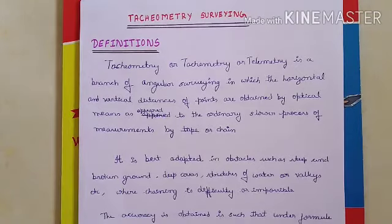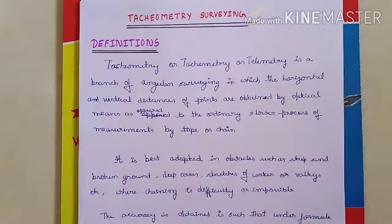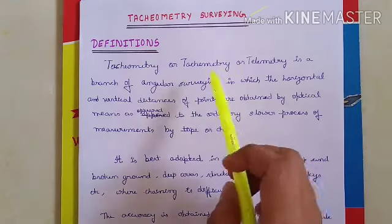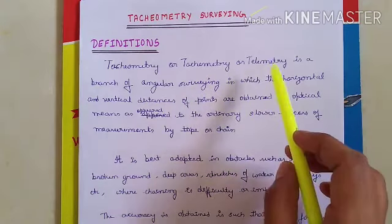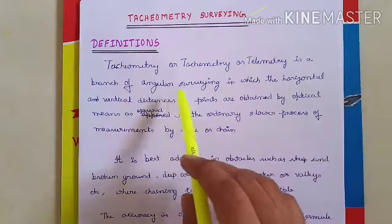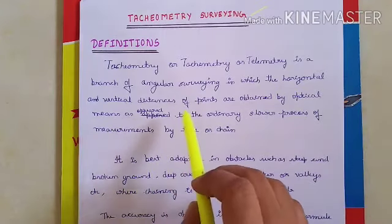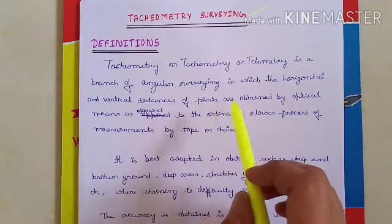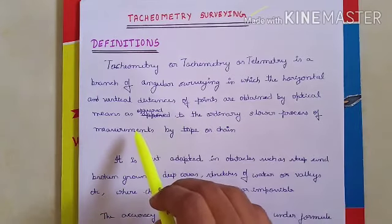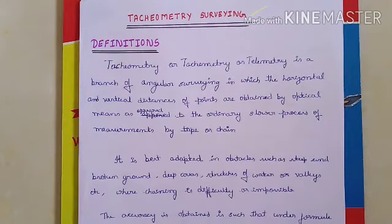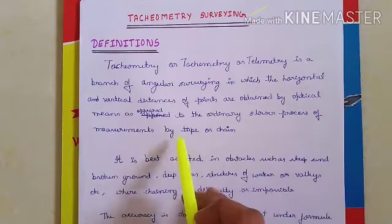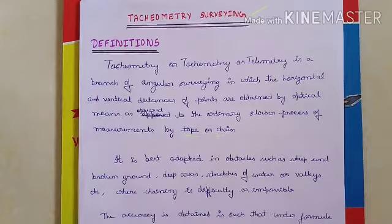In this session we will see Module 2 first part: tachymetry surveying. Tachymetry, also called tacheometry or telemetry, is a branch of angular surveying in which the horizontal or vertical distances of points are obtained by optical means, whereas in ordinary cases measurement by chain or tape is a slow process.